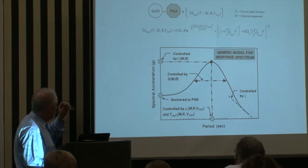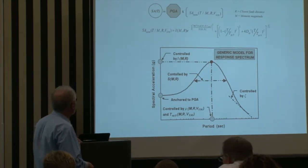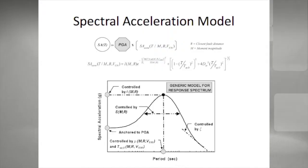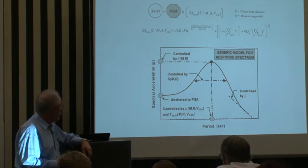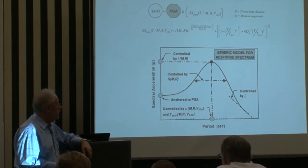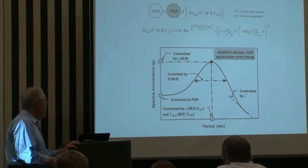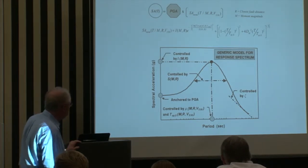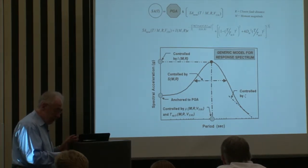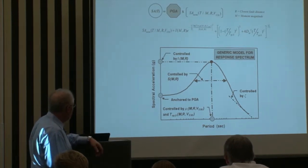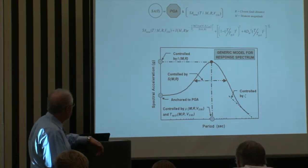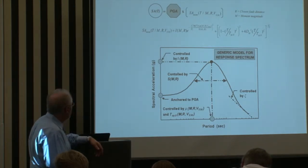Speaking about spectral acceleration, spectral acceleration is a function — that's another difference from standard models. We approximate SA as a smooth spectral shape function. Right now it's tested up to 10 seconds, but in principle you can extend it to longer periods, though it's not constrained at longer periods. It's structured so that it's anchored to PGA.